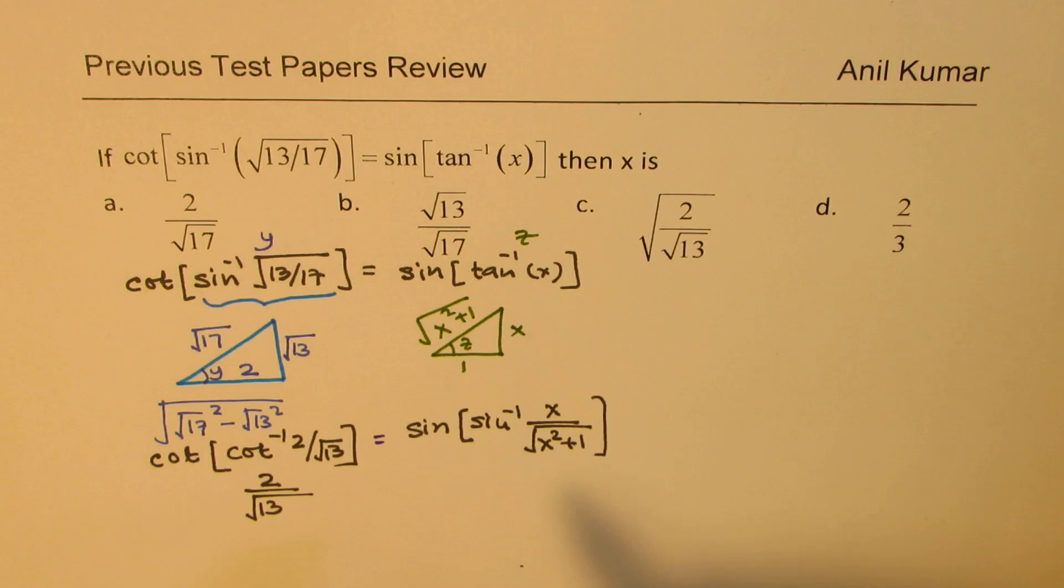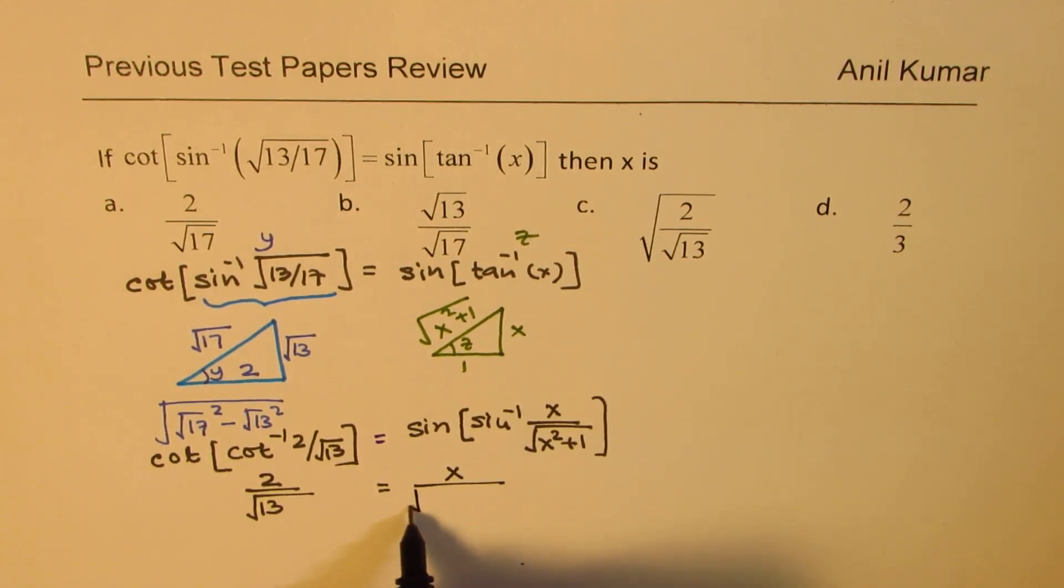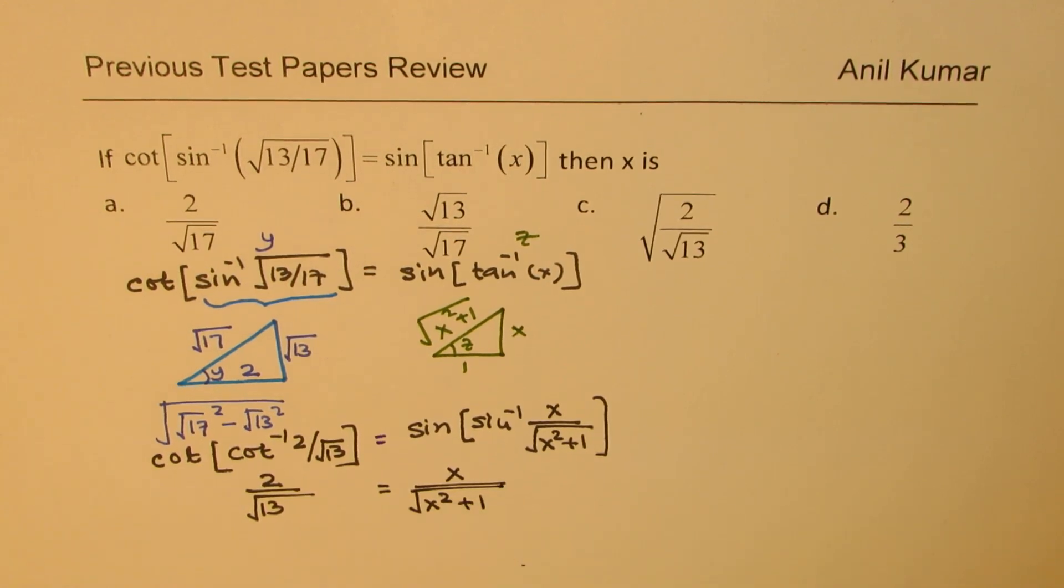Perfect. Now, that means that the right side is equal to x over square root of x square plus 1. So that is how we actually get our equations.